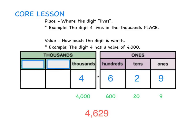Throughout this lesson, you have heard us talk about place and value. Place is where the digit lives. For example, the digit 4 in the number below lives in the thousands place. Value is how much the digit is worth. For example, the digit 4 has a value of 4,000. As you can see, place and value are two different things.